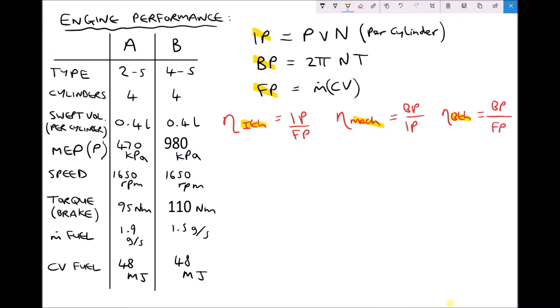We're going to compare two different engines. First of all we have engine A which is a two stroke engine and then we're going to look at engine B which is a four stroke engine. Both of these engines have four cylinders and the cylinders in both engines have a swept volume of 0.4 litres per cylinder. So in reality the engine is going to be drawing in 0.4 litres times four cylinders, or 1.6 litres. Both of these engines are 1.6 litre engines.